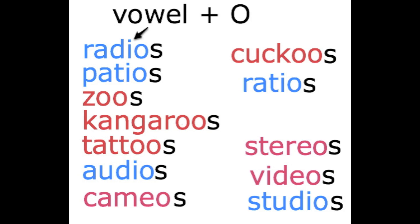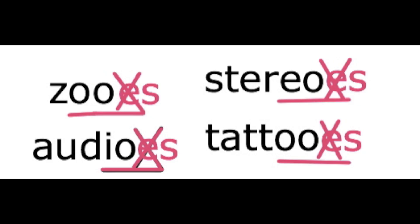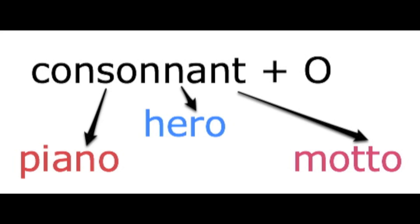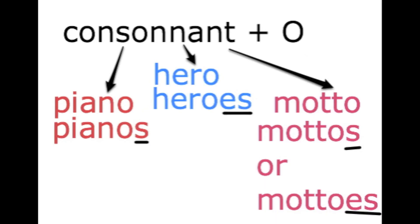This is a good rule because we don't want three vowels in a row. We don't want O-O-E-S or I-O-E-S, do we? So we just add an S. Now number two: when a word ends in a consonant plus O, we can add ES or S or both. There's no rule about this.